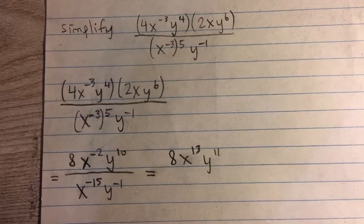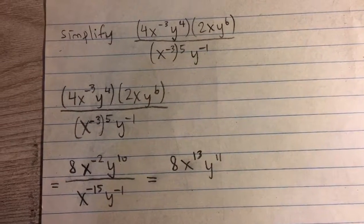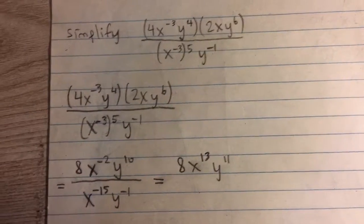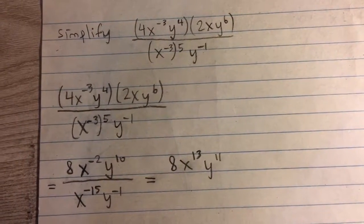Simplify 4x to the negative 3 power times y to the 4th times 2xy to the 6th all over x to the negative 3 to the 5th power times y to the negative 1 power.